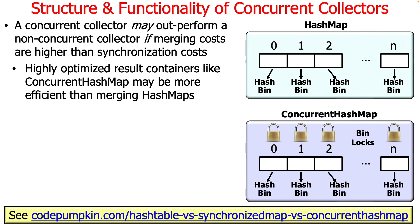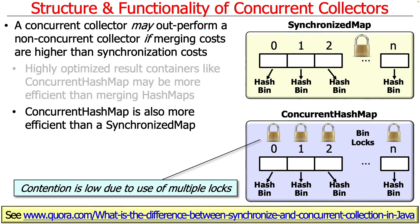We won't go into how it works in detail, but you can read about it if you're interested. There's also a legacy synchronized map that has been around in Java for a long time, but I strongly recommend against using it, because it only has a single lock, and therefore the contention will be much higher than for concurrent hash map, which has separate locks for each of the different buckets in the hash table.